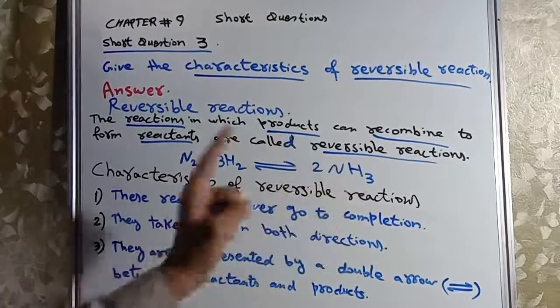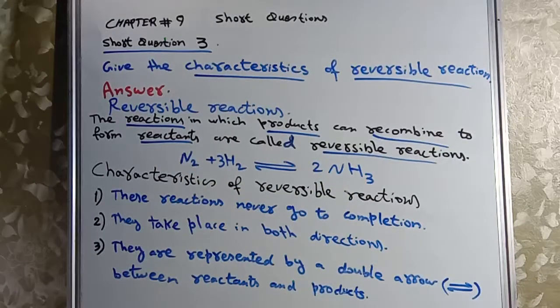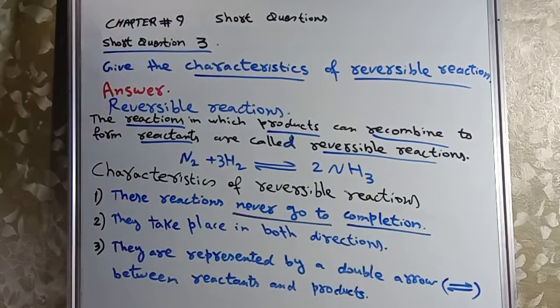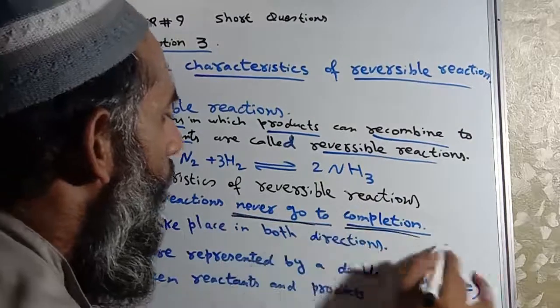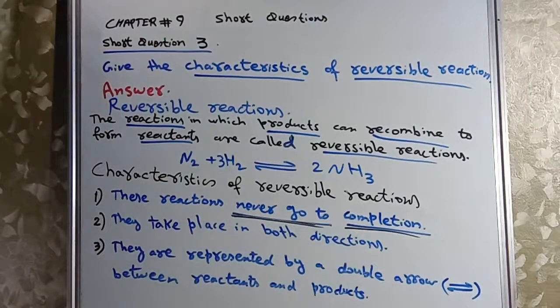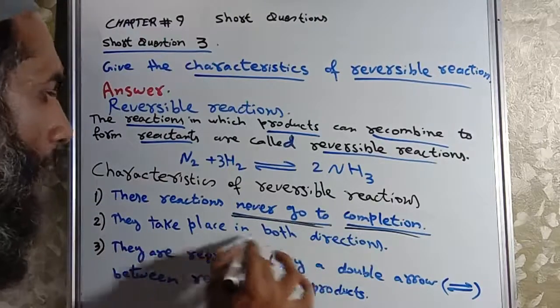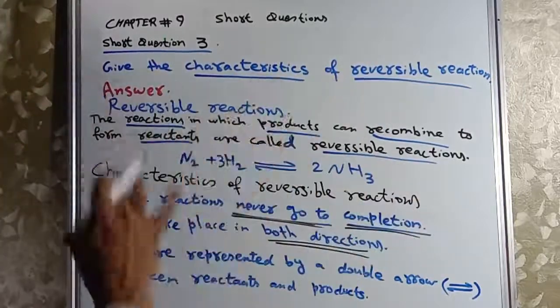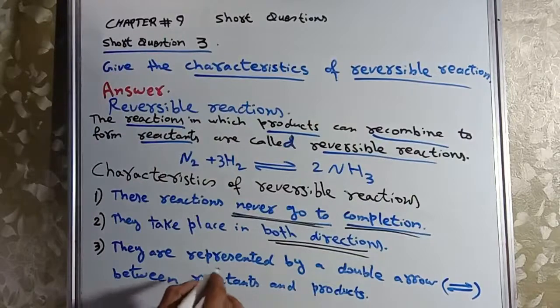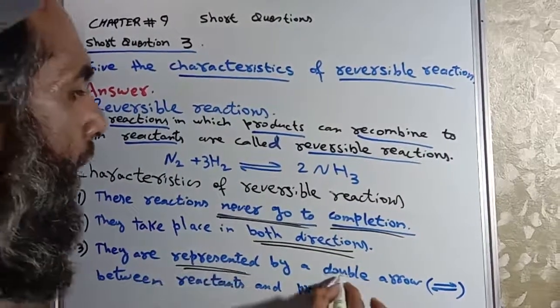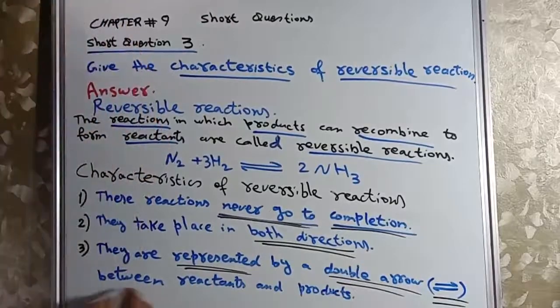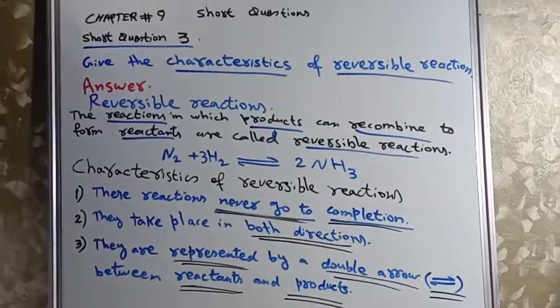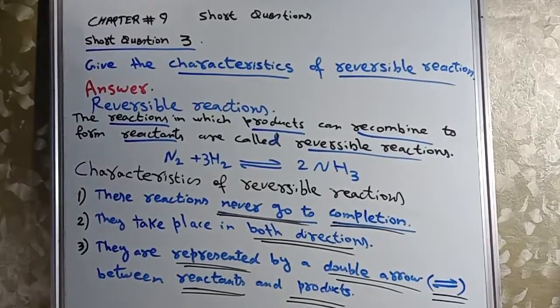Characteristics: This reaction never go to completion. They take place in both directions, left to right and right to left. They are represented by double arrow between the reactants and products.